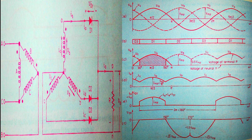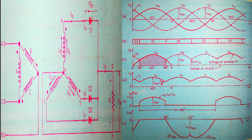We can conclude that from ωt = 30° to ωt = 150°, diode D1 is in forward bias while D2 and D3 are in reverse bias. After ωt = 150°, voltage VB increases and becomes greater than VA, so the voltage at point P becomes VB — diode D2 conducts while D1 and D3 are reverse biased. Only the diode connected to the highest positive voltage will conduct.